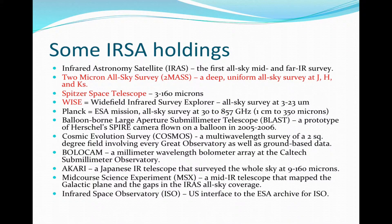Here are just some of IRSA's holdings. The Infrared Astronomy Satellite, or IRAS, was the first All-Sky mid and far infrared survey, and it was the reason IPAC was chartered in the 80s. You might have also used the 2-Micron All-Sky Survey — an All-Sky survey at J, H, and K bands, which is near-infrared. Spitzer's archive is also held at IRSA; those are pointed observations between 3 and 160 microns. WISE, the Widefield Infrared Survey Explorer, did an All-Sky survey between 3 and 23 microns.